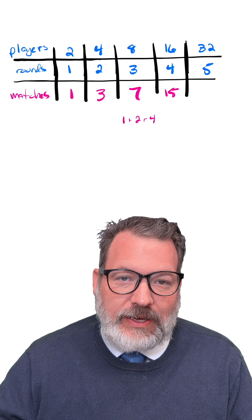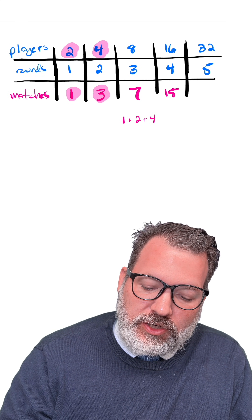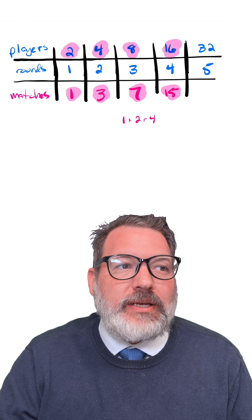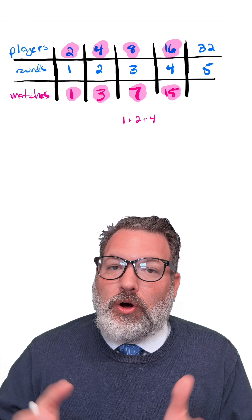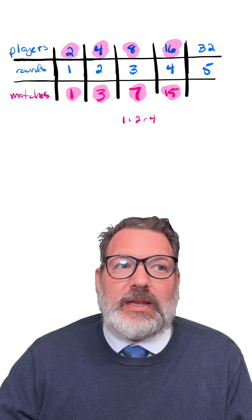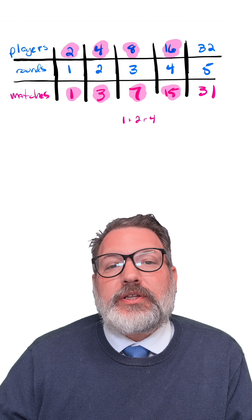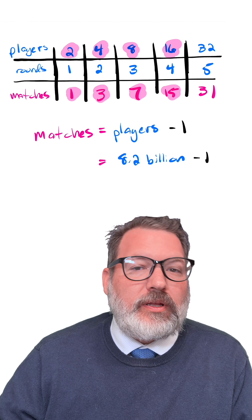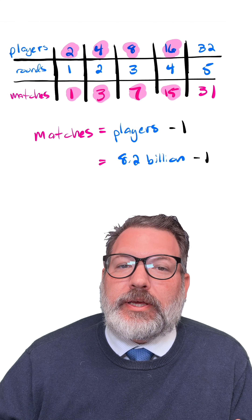But there's actually a much easier way to come up with that number. We don't need to add consecutive powers of two. We just need to notice that at every stage, the total number of matches is one less than the total number of players. The reason for this is that if we're going to go from 32 players all the way down to one, we have to have as many matches as it takes to eliminate all but one of those players. That is, for a five-round tournament with 32 players, we would need 31 matches.